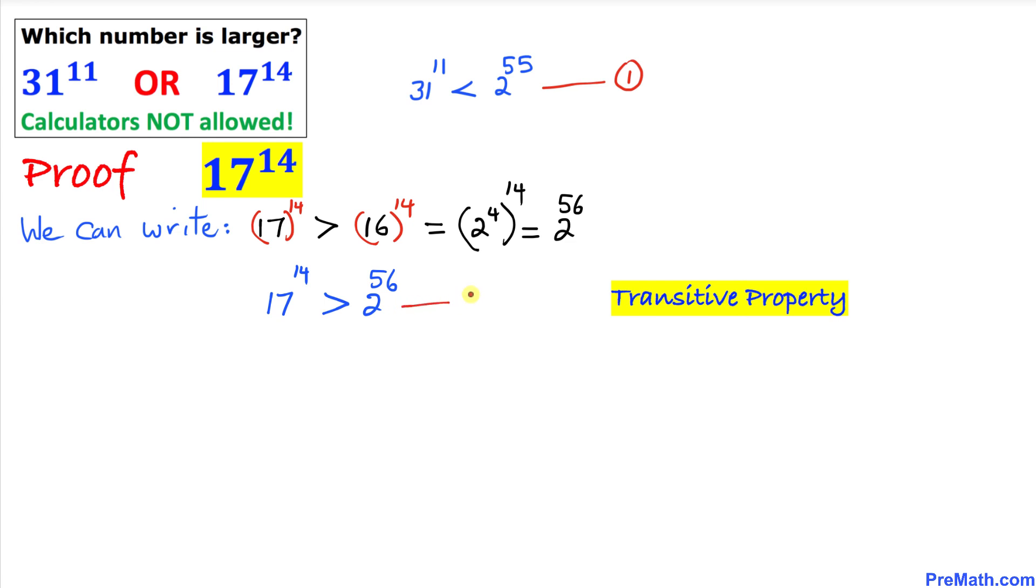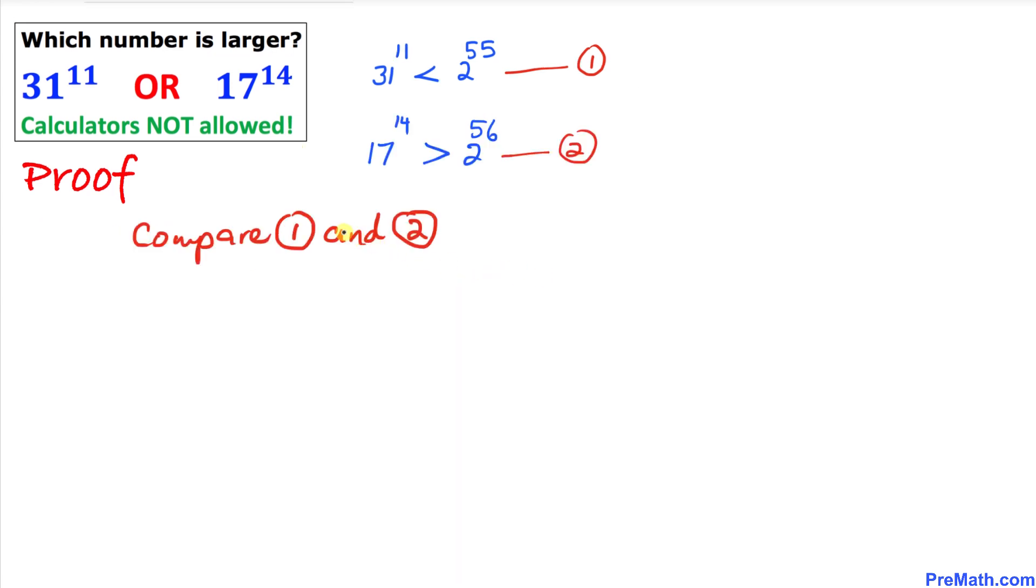Here's our final step. Let's go ahead and compare these inequalities 1 and 2. Let me write down inequality 2 first: I'm going to write 17^14 is greater than 2^56, and logically 2^56 is bigger than 2^55.